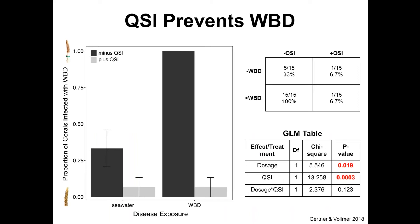Here are the results. On the x-axis we have the four treatments, and on the y-axis we have the proportion of corals infected. Corals that got seawater had good survivorship. Corals given disease alone all experienced full mortality within 36 hours. The really interesting piece: corals given disease plus QSI basically all stayed healthy throughout almost the entire experiment — only one of the 15 corals in this treatment died. This was extremely significant. QSI has the ability to prevent white band disease transmission.